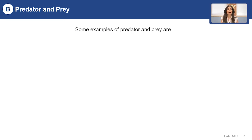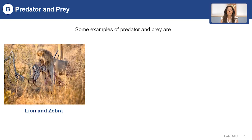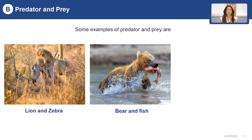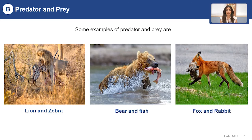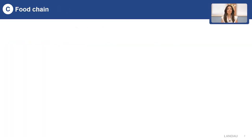In this slide, you can see some examples of predator and prey. In the first picture, you can see how the lion caught the zebra — the lion is a predator and the zebra is a prey. In the next picture, the bear is a predator and the fish is a prey. In the third picture, the fox is a predator and the poor rabbit is a prey.